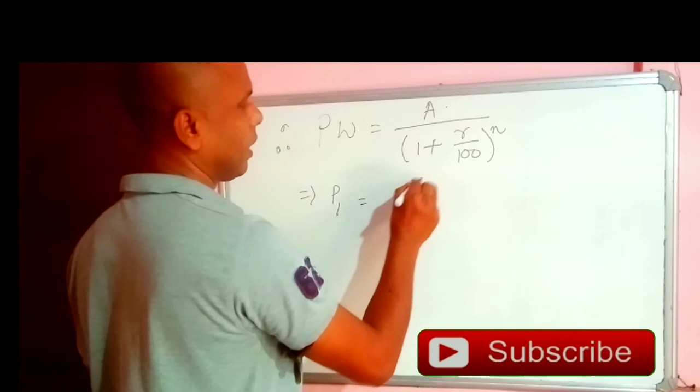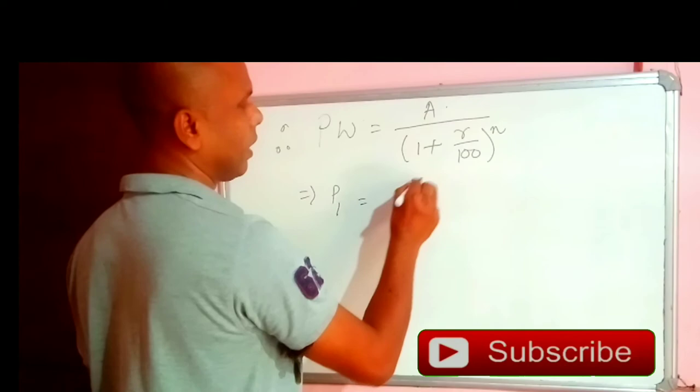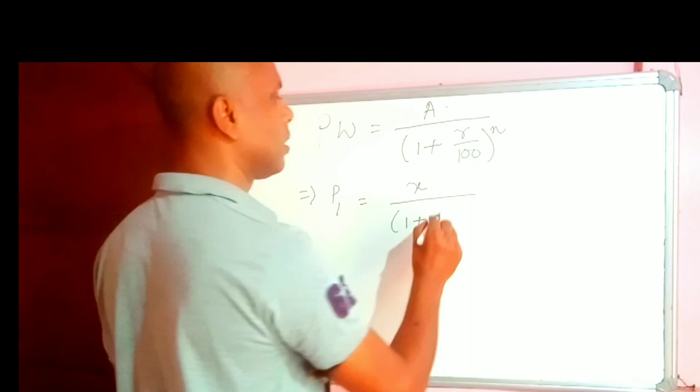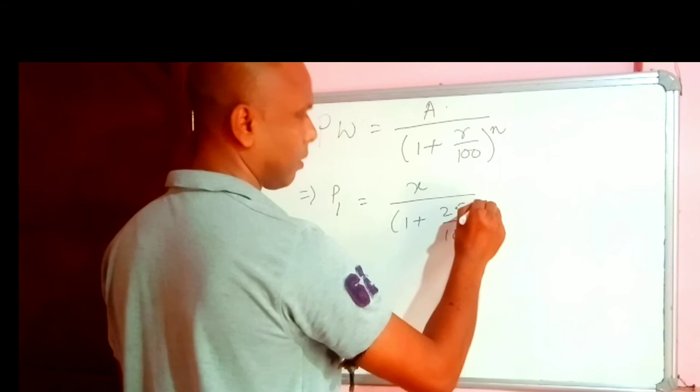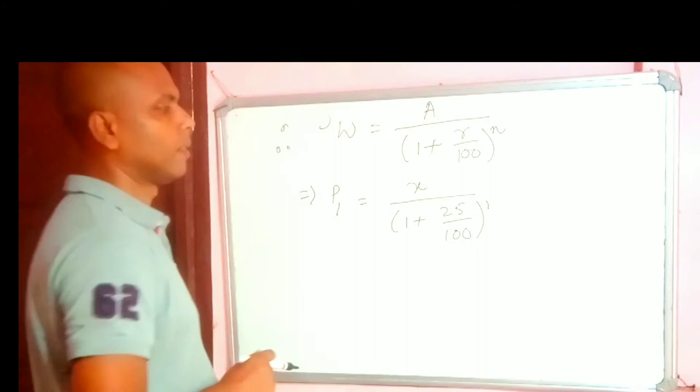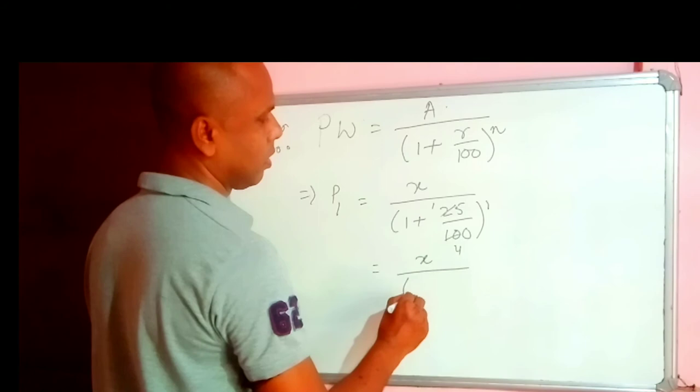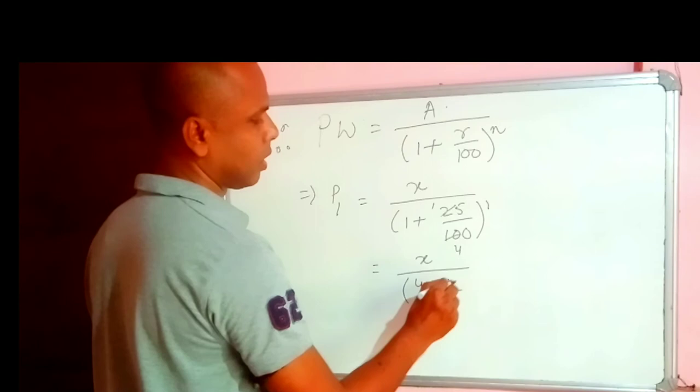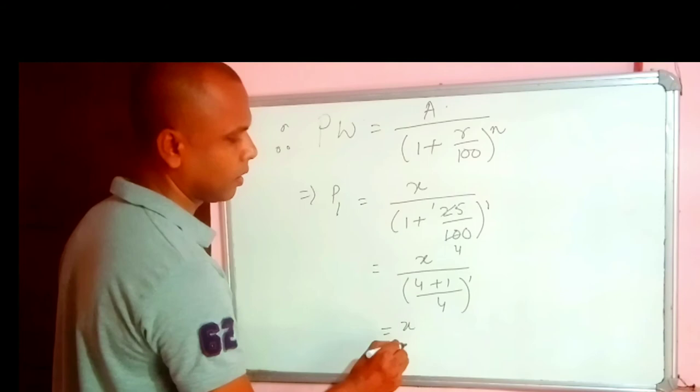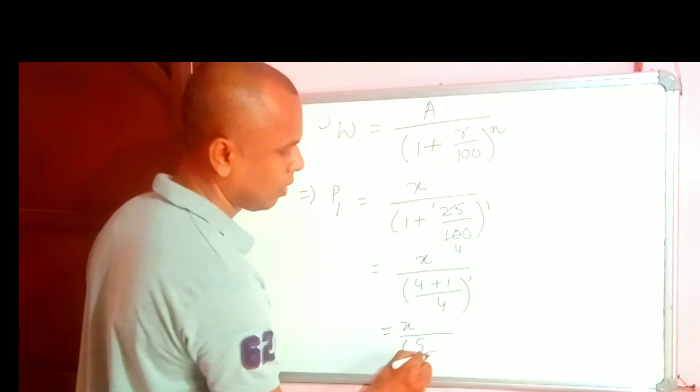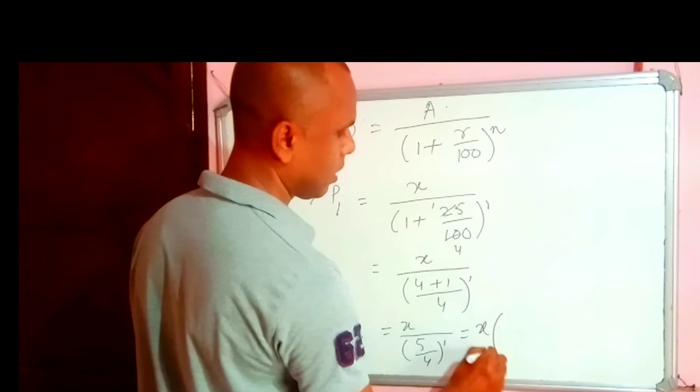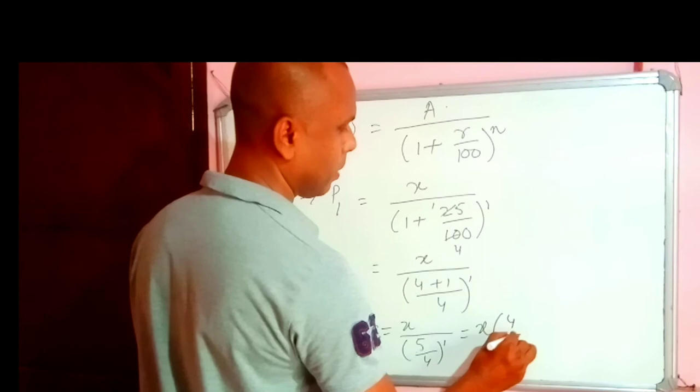We shall find out P1 equal to A, we have X here. One plus, this rate we have got 25%, so 25 by 100. And it is for the first installment, it is 1. So 25 we can cancel it, 25 for 100. So this equal to X, we have got LCM 4. Power 1 to 4 plus 1 all to the power 1. Which is equal to X by, let us retain the power 5 by 4 all to the power 1. Which will be equal to X. Take the reciprocal of this. So it will be 4 by 5 all to the power 1.